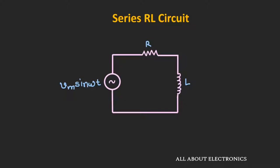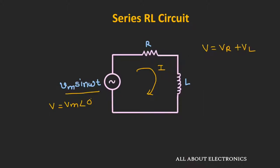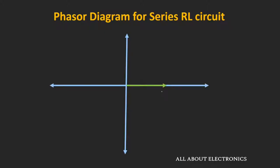Let us also see what is the impedance of this series RL circuit. We have applied an AC signal to this series RL circuit, which we can represent in phasor form as Vm at a phase shift of 0 degree, or simply V. Let us assume the current flowing through the circuit is I. Using Kirchhoff's voltage law, we can write V equals VR plus VL, where VR is the voltage across the resistor and VL is the voltage across the inductor. We can write VR as I times R and VL as I times jωL. When representing voltages in a series circuit, we always consider the current phasor as a reference, because current is common in all circuit components.